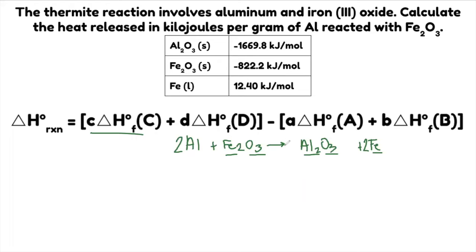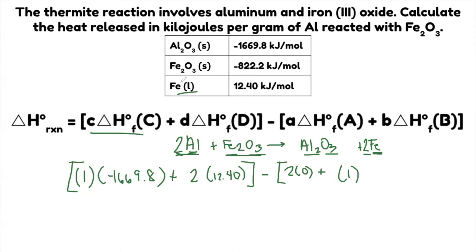So we start with the product. Coefficient of Al2O3 is one. You can opt not to write one. Then Al2O3, the enthalpy is negative 1669.8 plus this is Fe. The coefficient is 2 and the enthalpy is 12.40. Add them first, minus the reactant. So aluminum is 2. The enthalpy of aluminum is 0. Why? Because it is aluminum's most stable form. So it's always 0. And then add this. It's 1 times Fe2O3 is negative 822.2 kilojoules. So do the math. You will get negative 822.8 kilojoules.